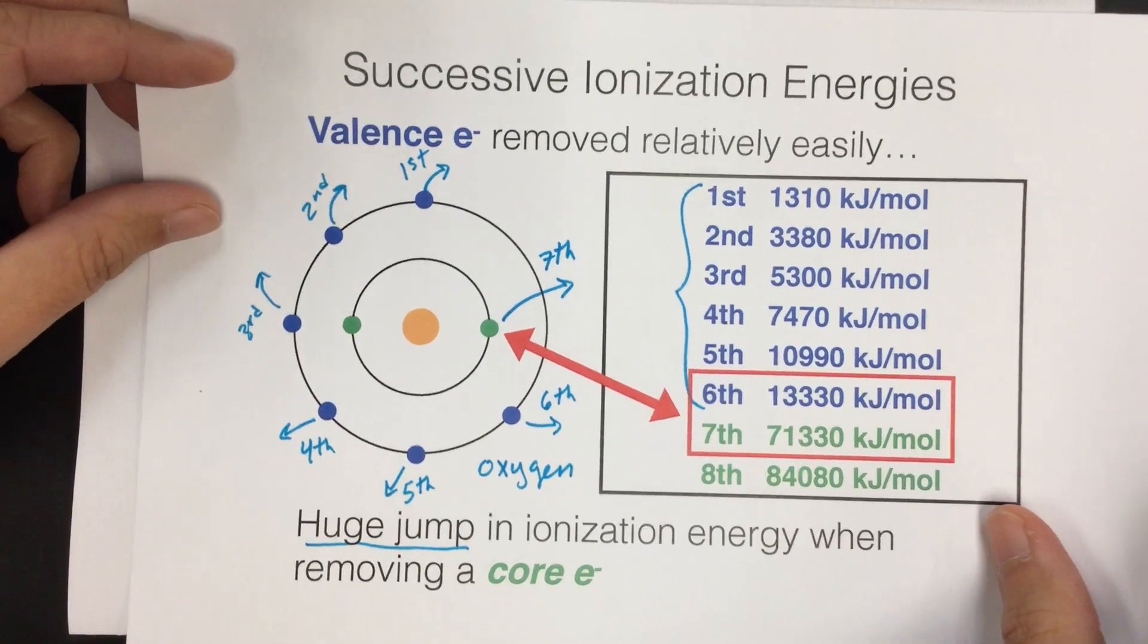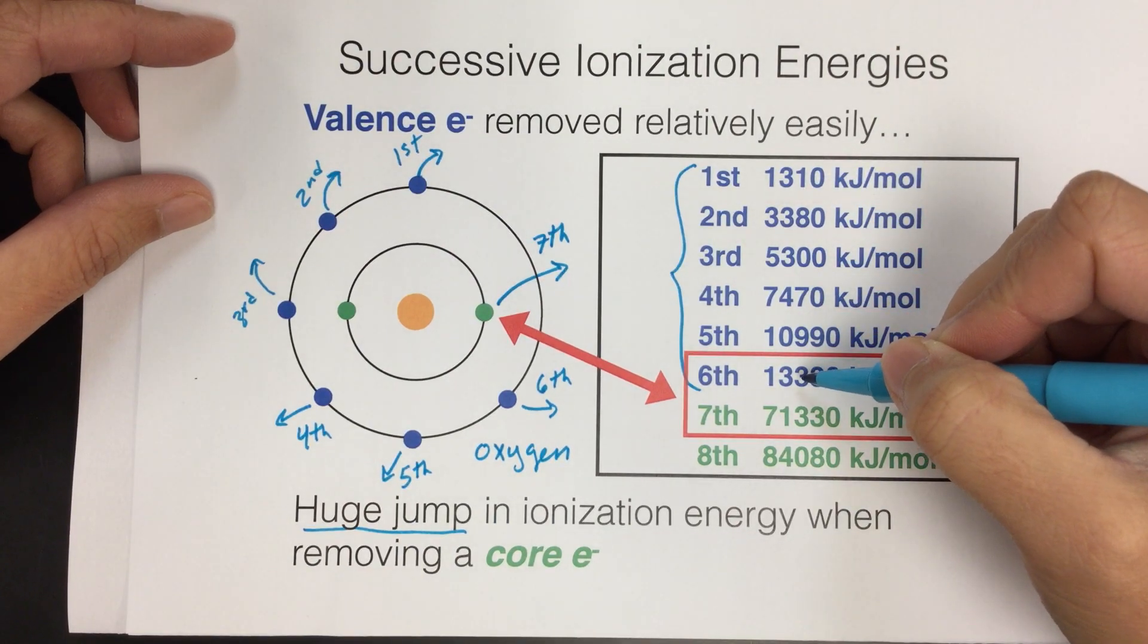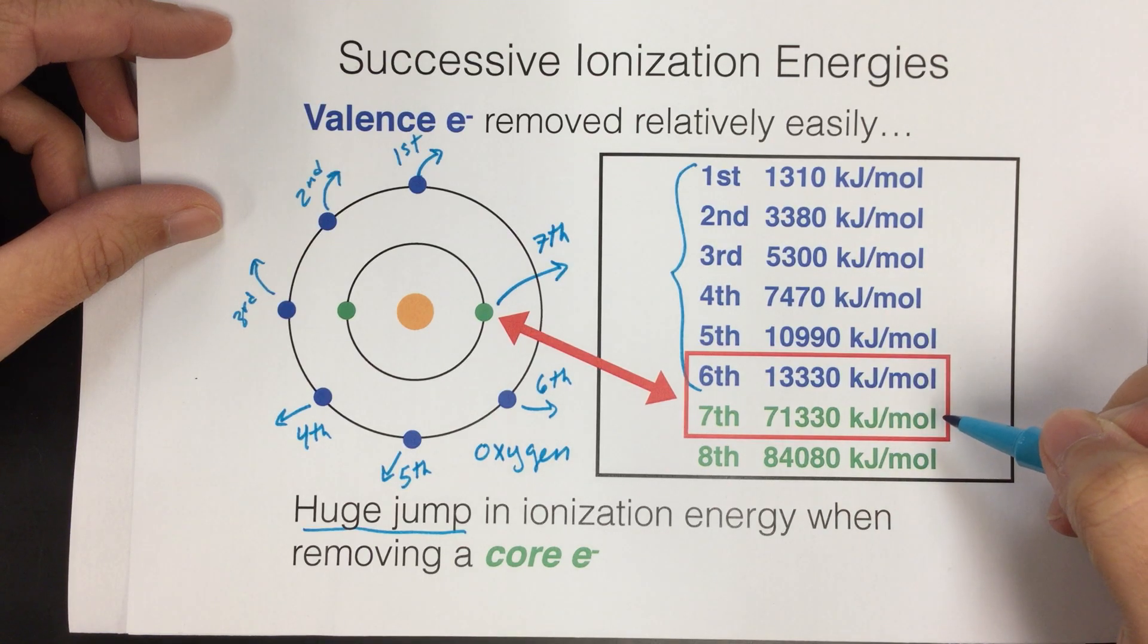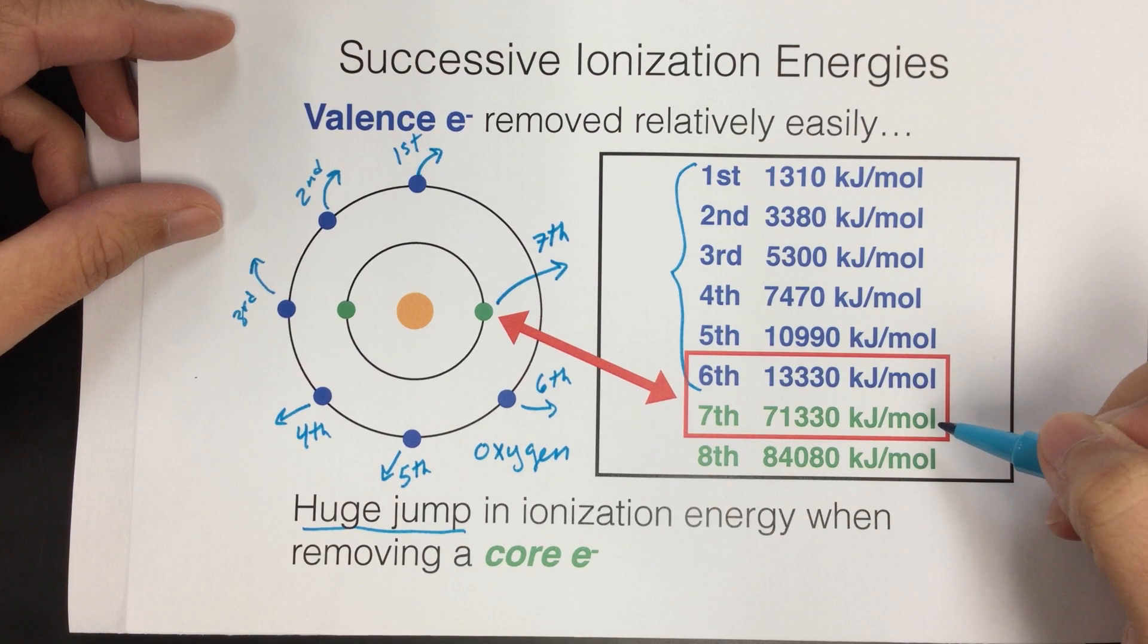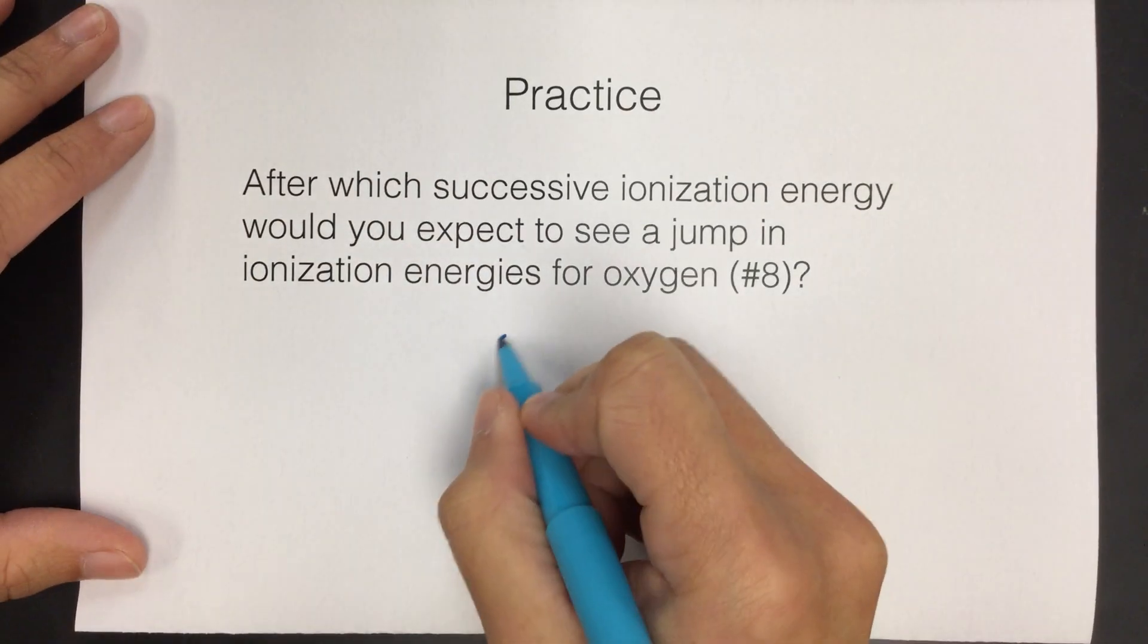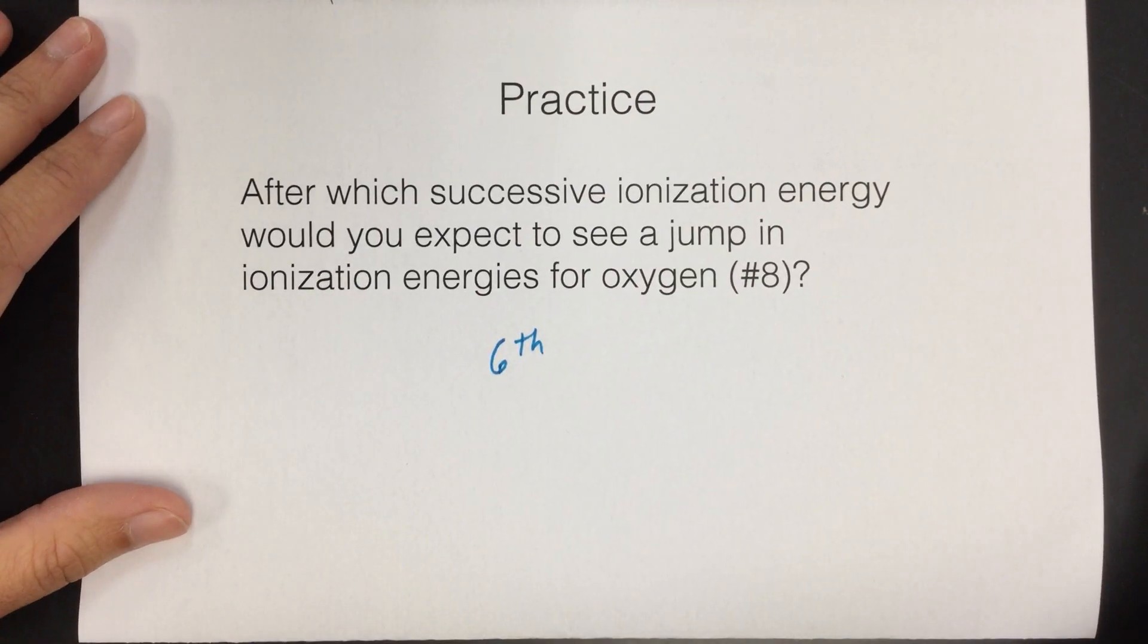Well, we know that oxygen, since it has the six valence electrons, will have little increases as we remove all six of those. But once we try to remove a seventh, it goes up a lot because it's a core electron now. So all we have to know is that oxygen has six valence electrons. So we're going to see a huge jump after the sixth. After the sixth electron is removed, we'll see a big jump in ionization energy.